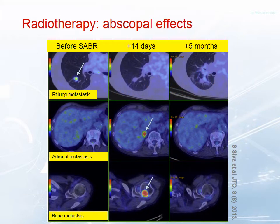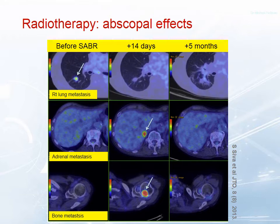What was interesting about this patient is that on the 14-day scan, we visualized a new adrenal metastasis not seen at baseline, and a new bony metastasis which was biopsy-proven — and subsequently at five months it regressed. This is a so-called abscopal effect, where treatment of a lesion with radiotherapy or other modalities may result in regression of disease elsewhere, perhaps through immunological effects — a kind of self-vaccination after tumor necrosis, with an inflammatory response and subsequent regression of these metastases.